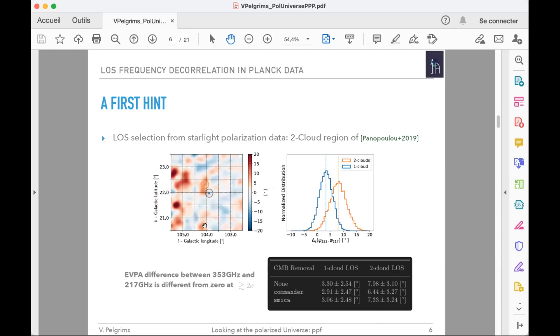To look for this effect, what we did is first use results from starlight polarization studies, the work that Brandon showed earlier. Thanks to GAIA and collaborators, we know in this particular region of the sky, the orange one here, that we have two clouds with magnetic fields having different orientations by 60 degrees, and in the nearby line of sight in blue, we know that we have only one cloud that contributes to the signal.